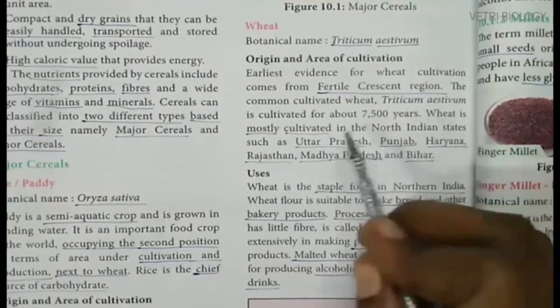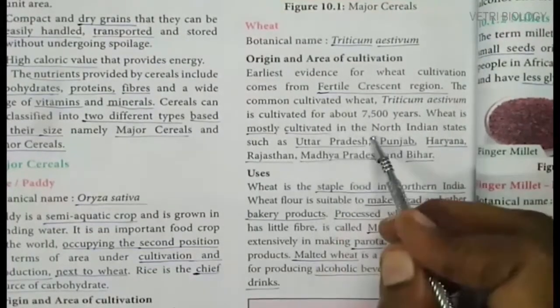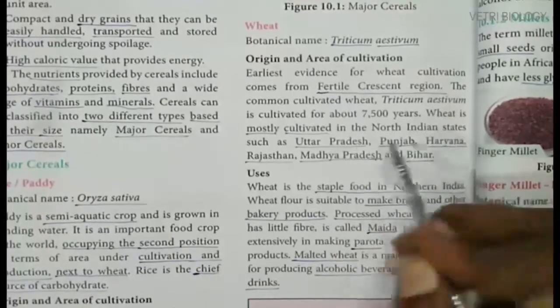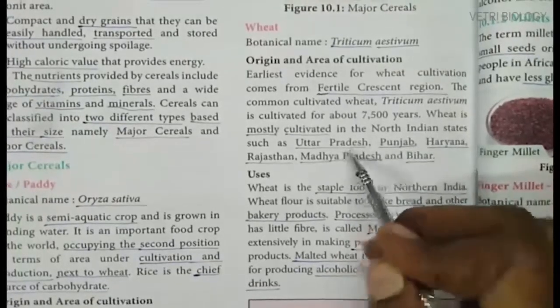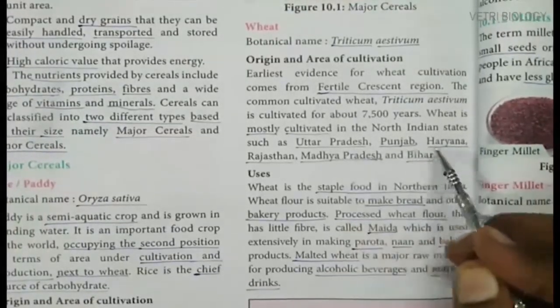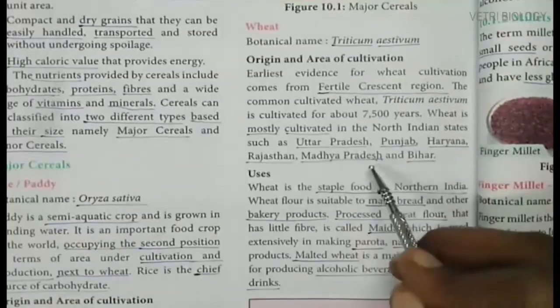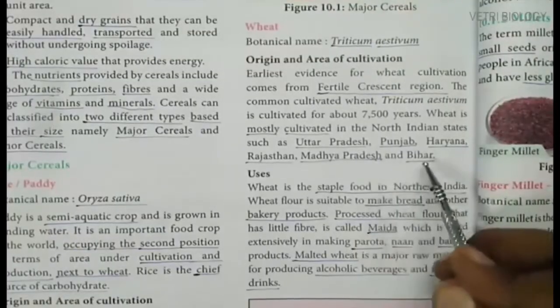Wheat is mostly cultivated in North Indian states such as Uttar Pradesh, Punjab, Haryana, Rajasthan, Madhya Pradesh and Bihar.